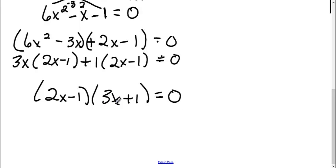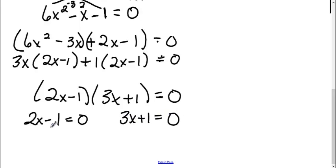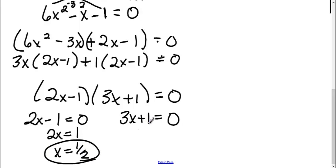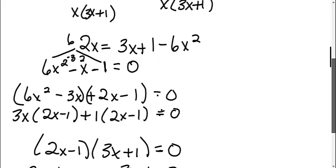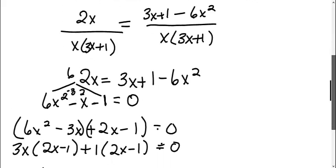Now that I have my two parentheses, I can set each equal to zero. For 2x minus 1 equals 0, I add 1 to the other side to get 2x equals 1, then divide by 2 to get x equals 1 half. For 3x plus 1 equals 0, I subtract 1 to get 3x equals negative 1, then divide by 3 to get x equals negative 1 third. So our answers are x equals 1 half and x equals negative 1 third.